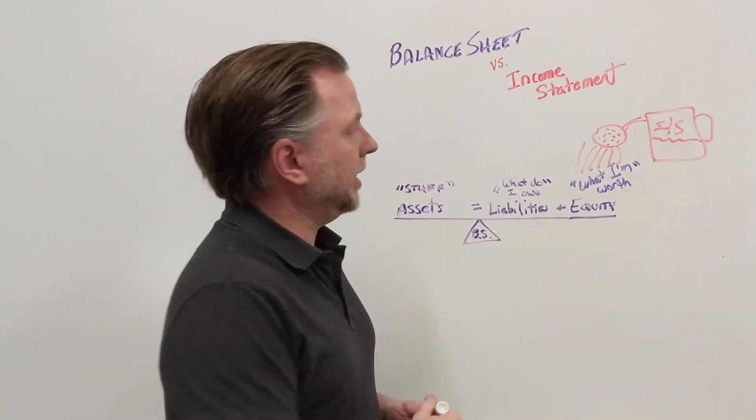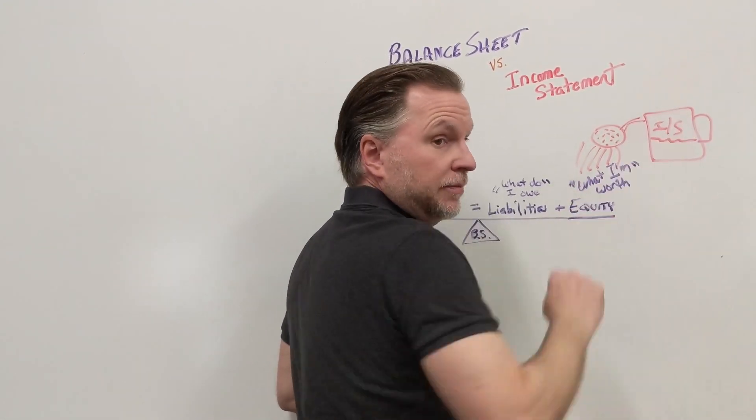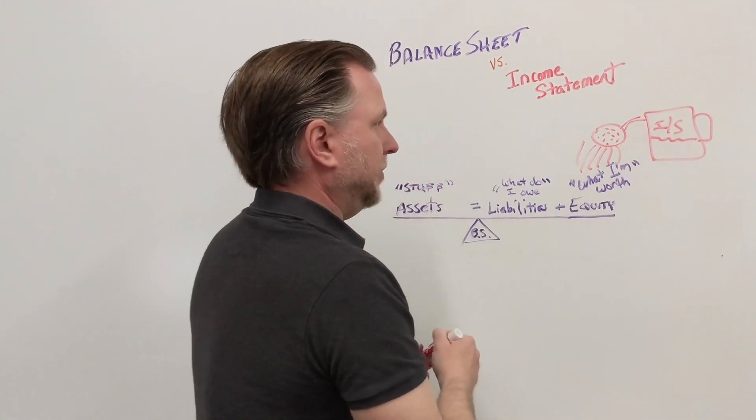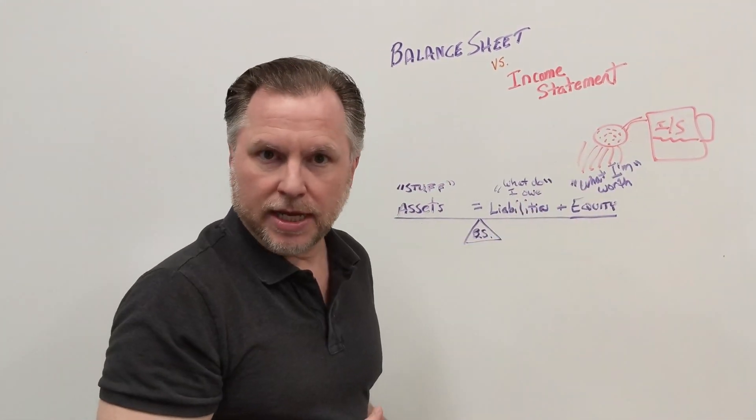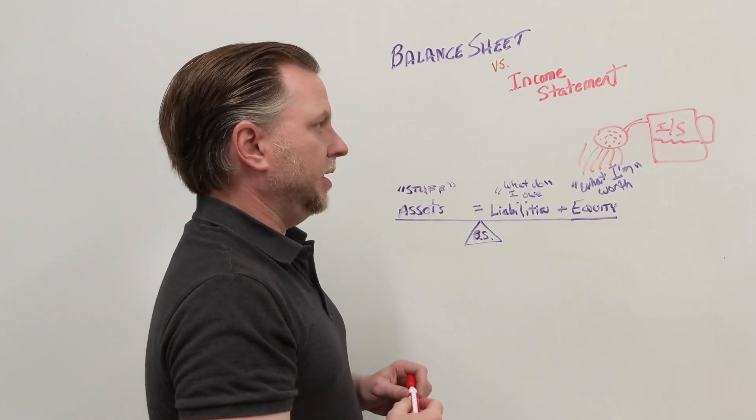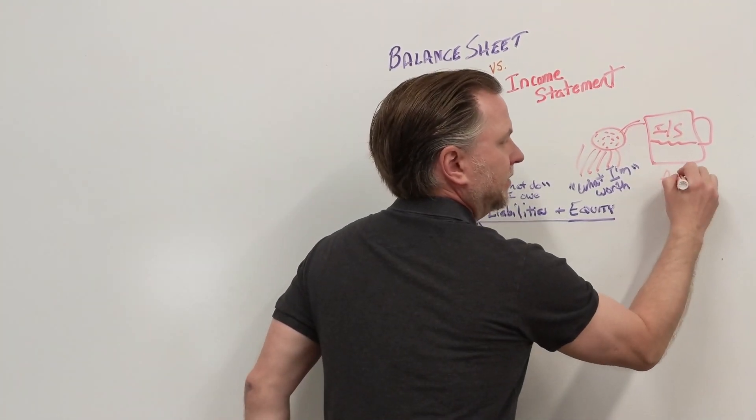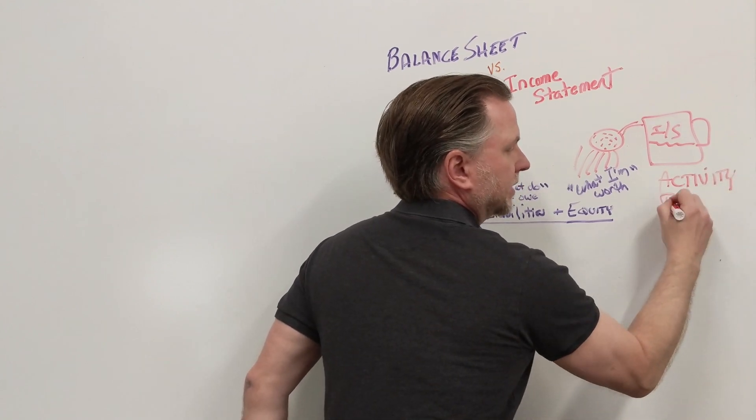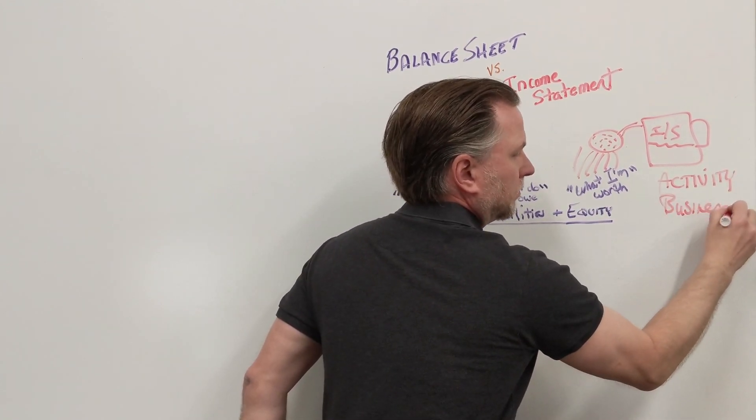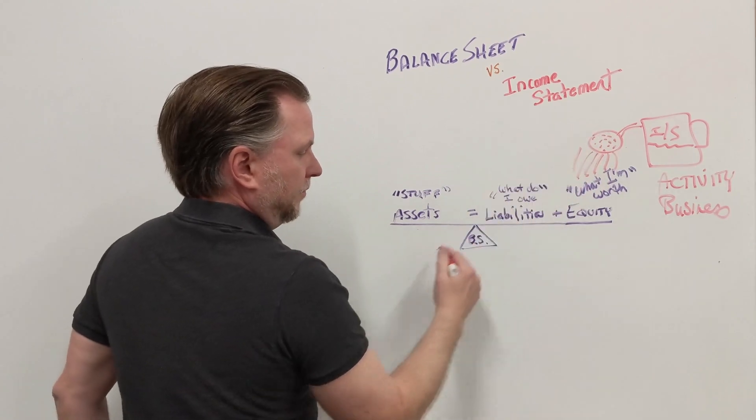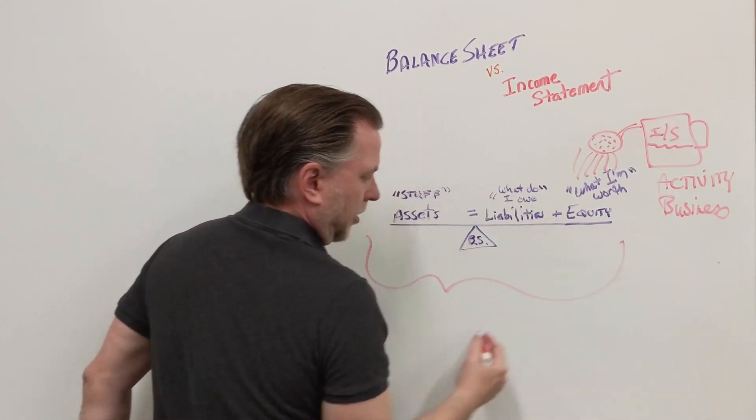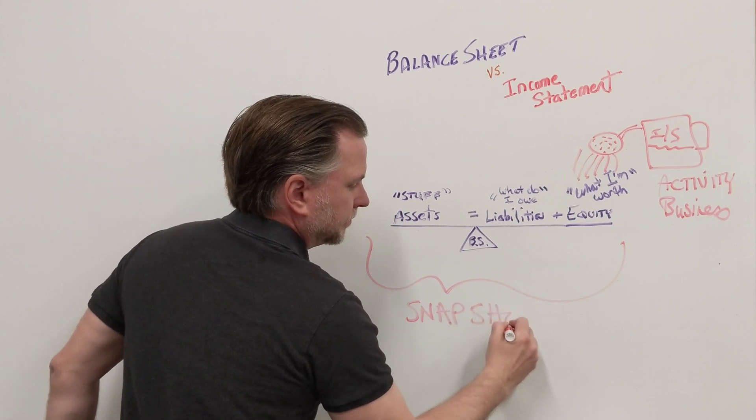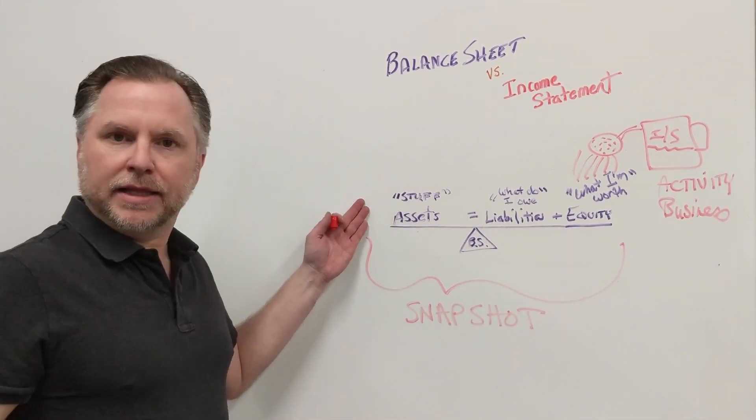Of course, if we lose money, it will take what we had before, take out of our net worth. So the income statement feeds the balance sheet through the equity section. And again, this is based on activity related to our business. It feeds into our entire snapshot called our balance sheet.